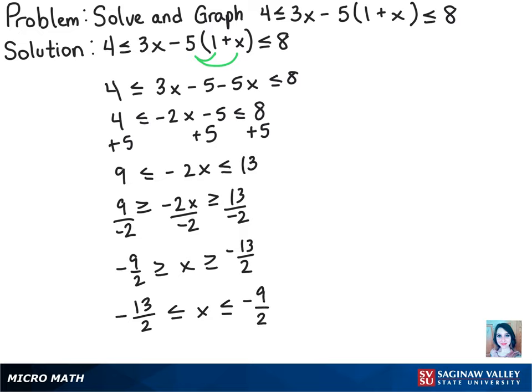So now with interval notation we have to start with brackets since we know that the solution includes those numbers as well with the equal sign. So then it goes from negative 13 halves to negative 9 halves.